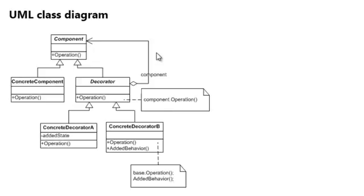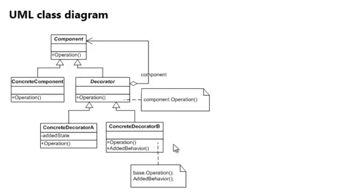What we can then do, when we have a decorator which has all these same properties — in this case just operation, but a lot of components have many more properties and methods — we can create a concrete decorator that actually adds behavior to the component. Concrete Decorator A can, for example, add state. It will still have the operation method, and the operation method will still call the concrete component's operation. When we create a second concrete Decorator B, it will add, for example, extra behavior — its operation will call the base operation, which in turn also calls the base operation if possible.